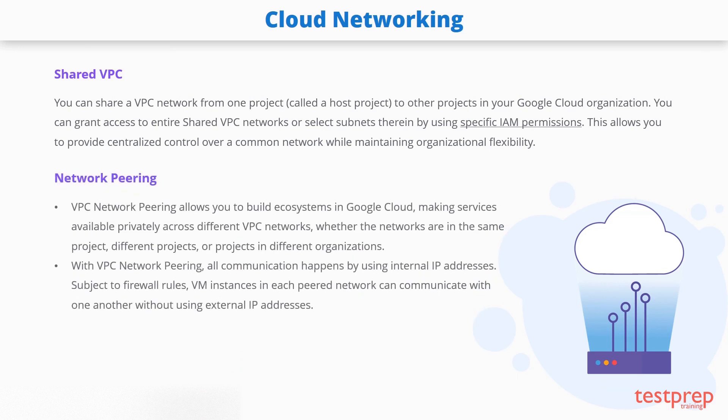VPC network peering allows you to build ecosystems in Google Cloud, making services available privately across different VPC networks, whether the networks are in the same project, different projects, or projects in different organizations. With VPC network peering, all communication happens by using internal IP addresses. Subject to firewall rules, VM instances in each peered network can communicate with one another without using external IP addresses.